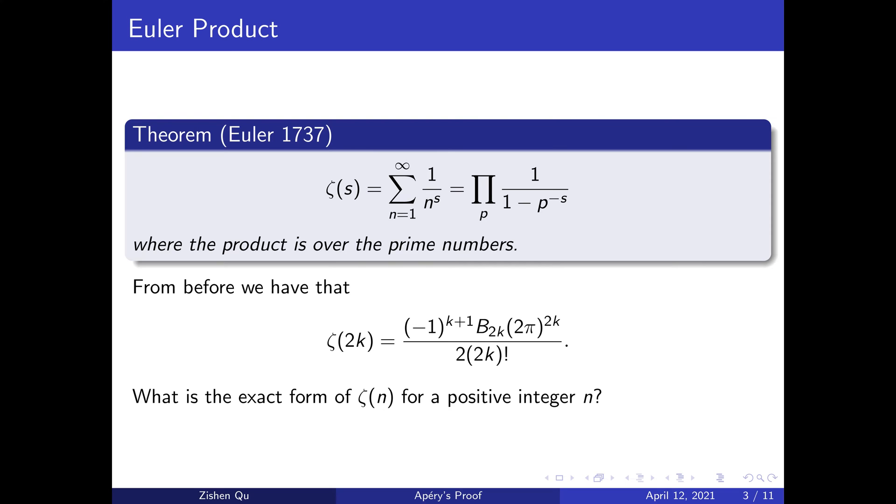From the previous slide, we have an exact formula for the even positive integers of ζ. So naturally, we should ask what is the exact form of ζ(n) for positive integers n? Unfortunately, this is too hard, and we have to content ourselves with partial results, such as the properties of ζ(n) for positive integers n.